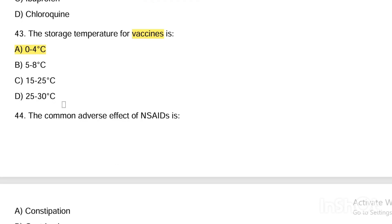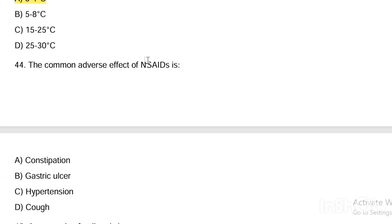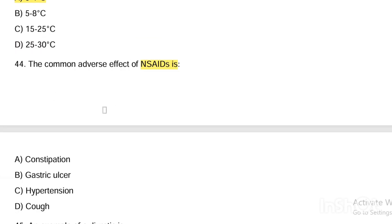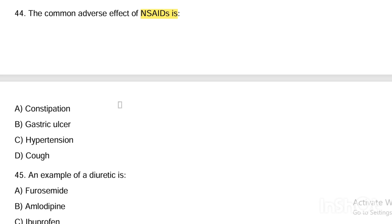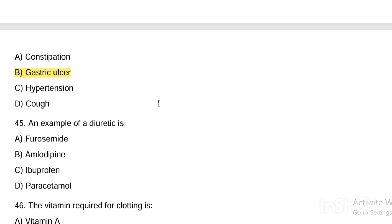Next question. The common adverse effect of NSAIDs is: Option A, constipation. Option B, gastric ulcer. Option C, hypertension. Option D, cough. Answer is Option B — gastric ulcer is the common adverse effect of NSAIDs.